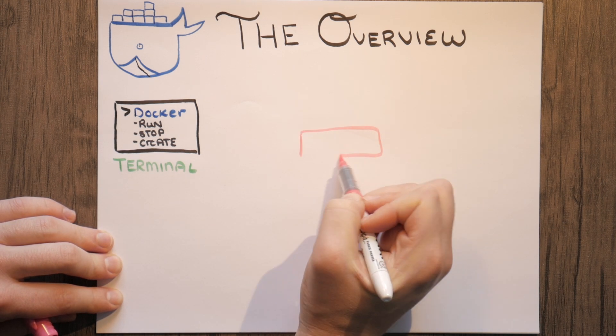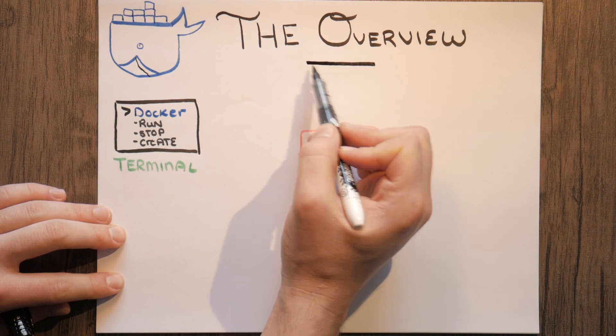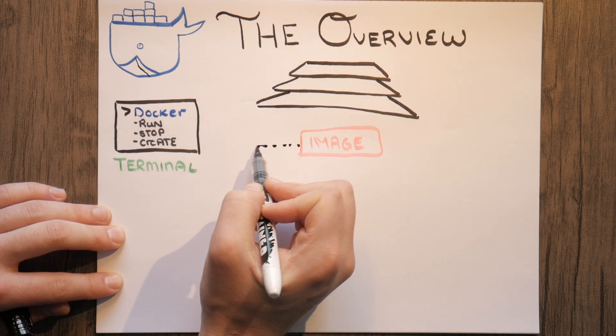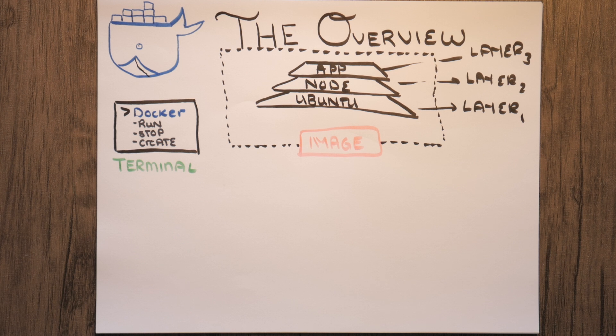We're going to start talking about the image, and the image is nothing more than layers of software layered on top of each other. We have a base layer that could be something like Ubuntu, Node on top of that, and then our application code on top of that. We call these layer one, layer two, layer three — the layers of our software that compose our final image that we use to deploy and create containers out of.